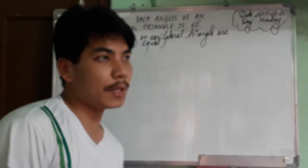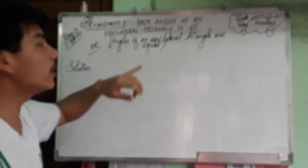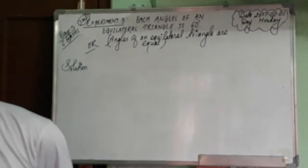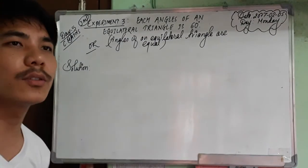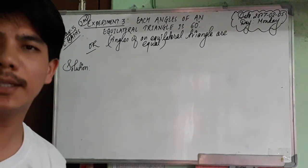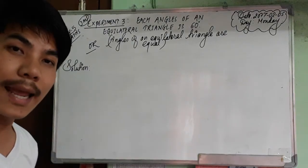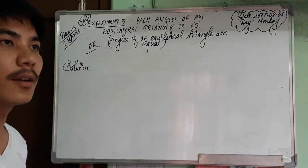Okay, this is another experiment. Each angle of an equilateral triangle is 60 degrees, or the angles of an equilateral triangle are equal. That is 60-60-60. A triangle's interior angles sum to 180, and the three angles are 60-60-60. Each angle of an equilateral triangle is 60 degrees.